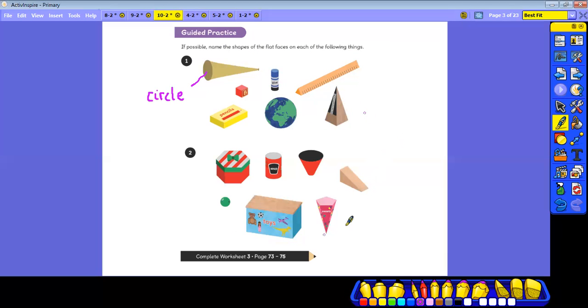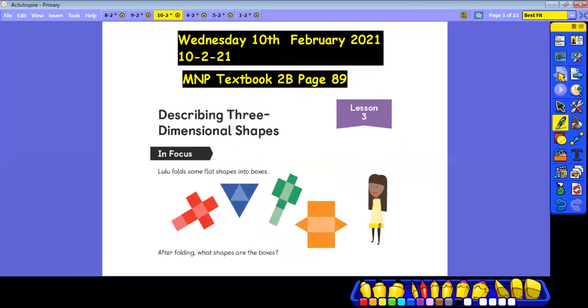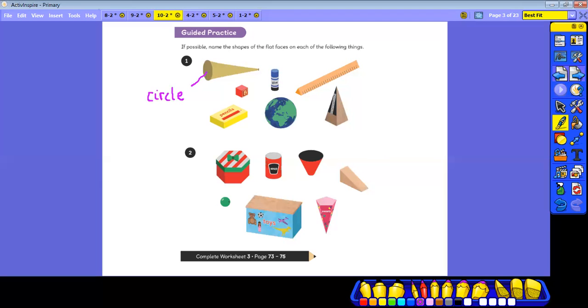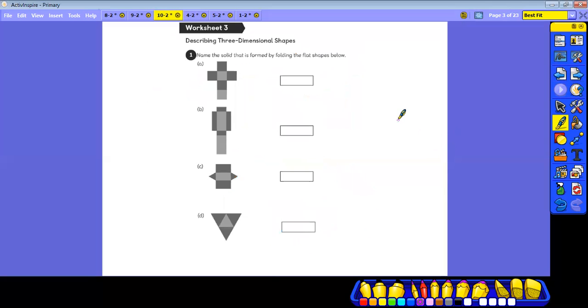And then you've got to find the flat faces on these shapes here. You're just naming the flat faces. So if you were able to do what Lulu did and flatten the shapes, what shape would the flat faces be? And then, if you complete this task in less than an hour, you know to go to your workbook. Pages 73 to 75, so there are three pages to complete today.